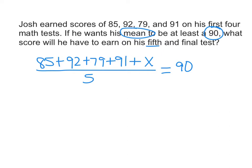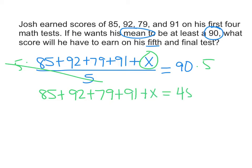So now to solve this, we're going to solve for X by undoing the dividing by five. So we're going to multiply both sides by five. So these cancel, and we have 85 plus 92 plus 79 plus 91 plus X equals 450.